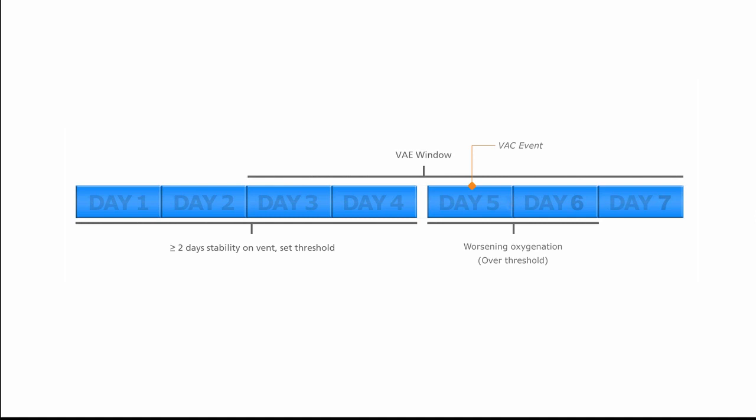The next step is to define the VAE window period — the period of time in which the VAC would be determined to be infection-related. In this example, the VAE window goes from day three, which is two days before the VAC event, through day seven, which is two days after the VAC event. This is the period during which evidence of an infection could elevate this to an IVAC or a possible or probable VAP.